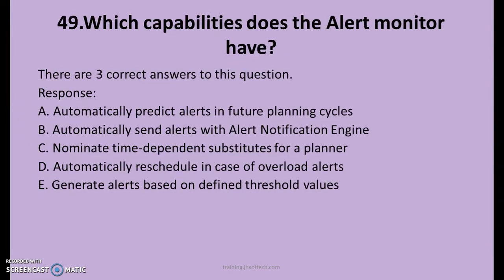49th question. Which capabilities does the alert monitor have? There are three right answers. A. Automatically predict alerts in future planning cycles. B. Automatically send alerts with alert notification engine. C. Nominate time-dependent substitutes for a planner. D. Automatically reschedule in case of overload alerts. E. Generate alerts based on defined threshold values. The right answers are B, C and E.